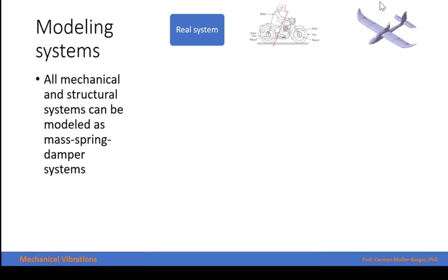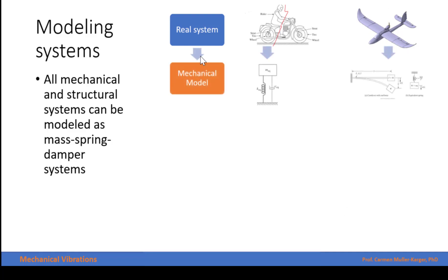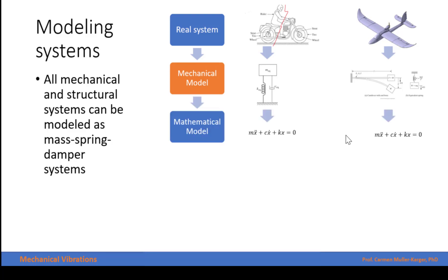For example, we have a motorcycle, or we have the wings of an airplane. The mechanical model will be the equivalent mass — in this case the passenger, the seat, and the motorcycle — and the suspension, which is a spring and a damper. Here the wing of the airplane is modeled as a cantilever beam with a mass. After we find the mechanical model, we will be able to find the mathematical model, and we will do that in a further step.